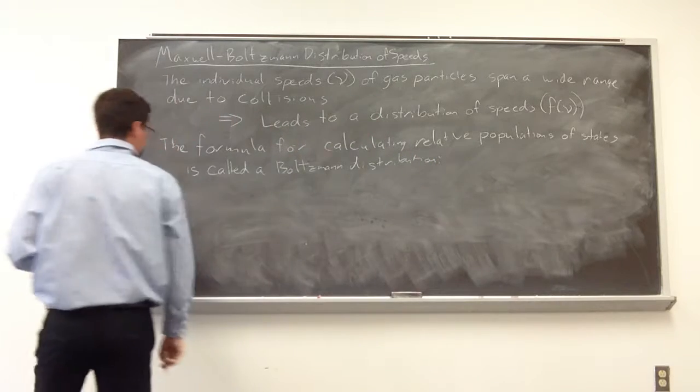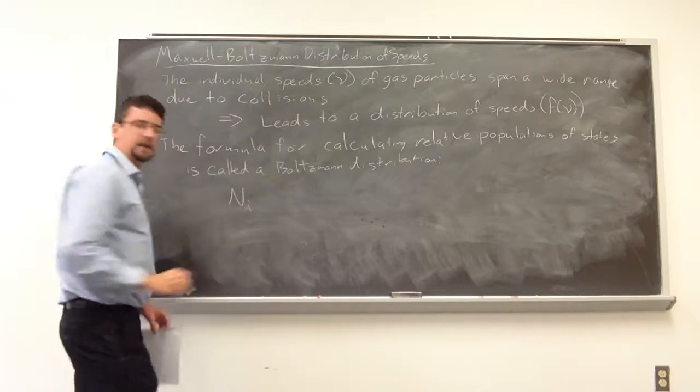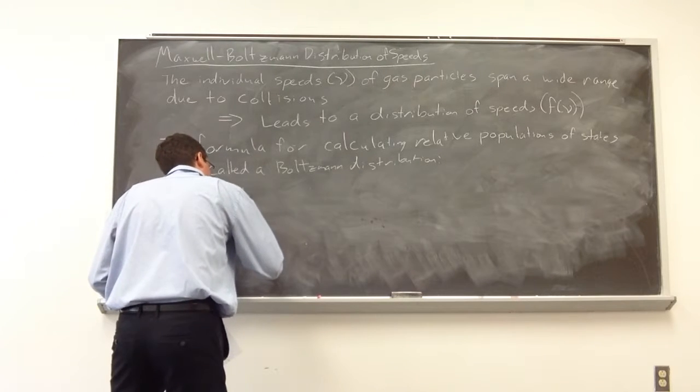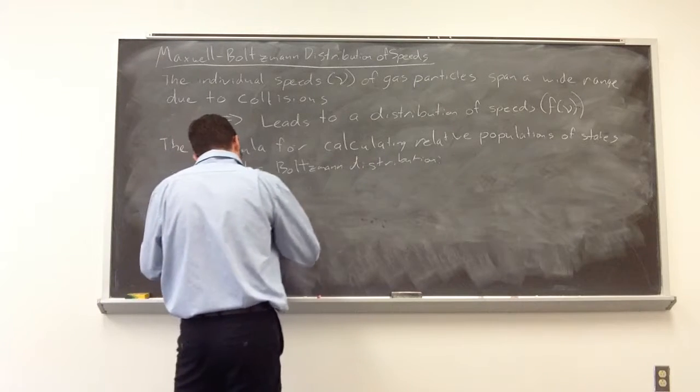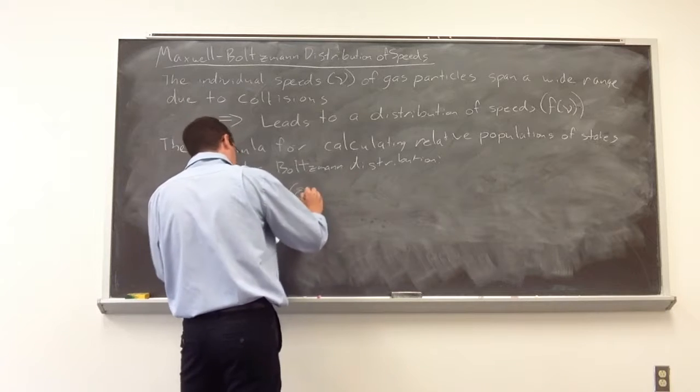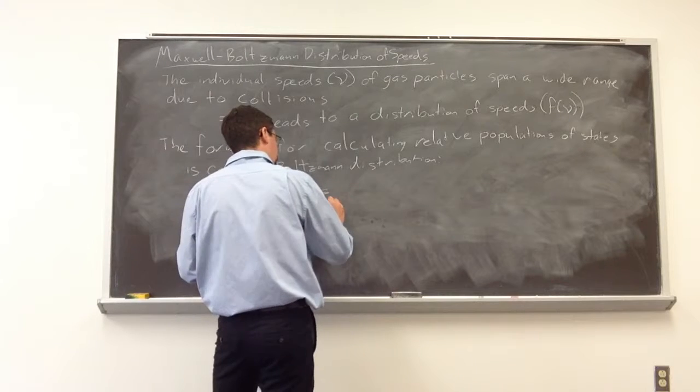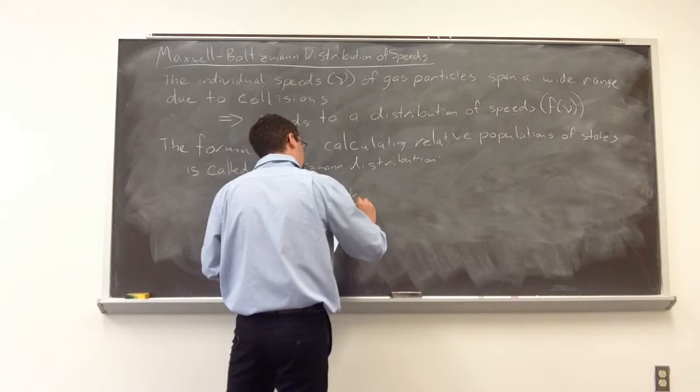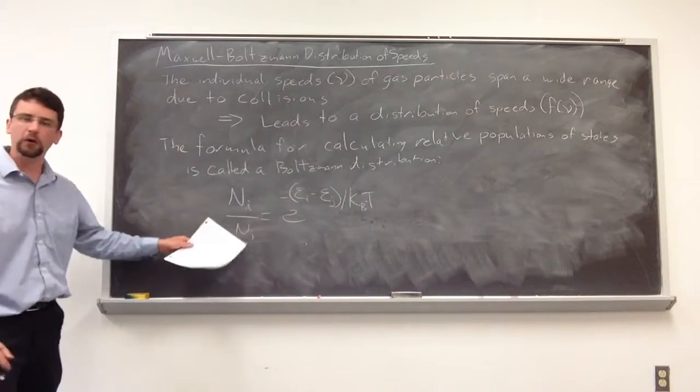And we're going to consider a ratio. So we have particles, the number of particles in some state N sub I, divided by the number of particles in another energetic state N sub J, is equal to E to the negative epsilon I, so that's the energy of the particles in state I, minus the energy of the particle in J, divided by KB times our temperature. And this is per molecule.